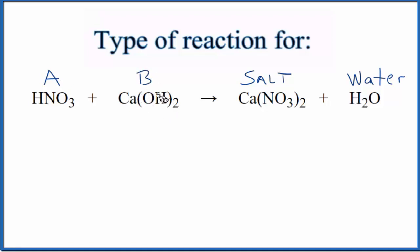I can tell that this is a base because I have a hydroxide, this OH group here, bonded to a metal. Those are bases. And then with the HNO3, if I see an H in front of a compound, I'm thinking that it's an acid.